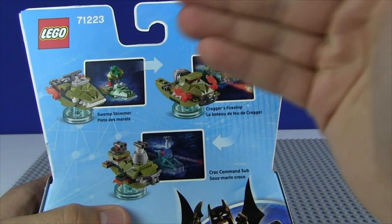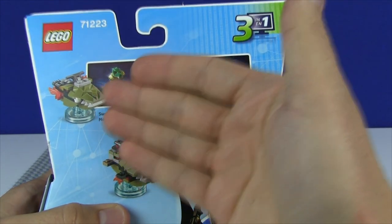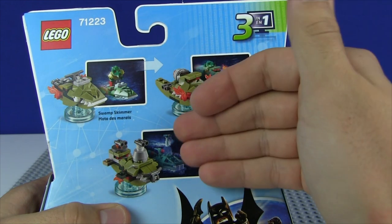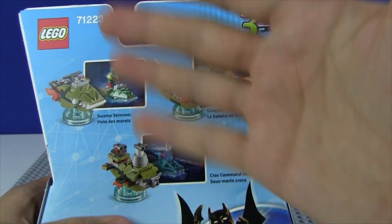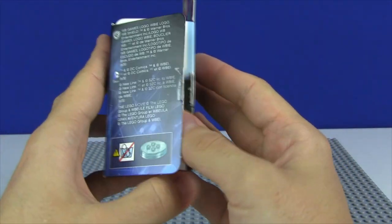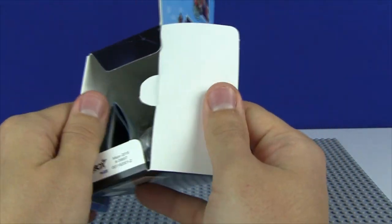And then last but certainly not least, we have the Krog Command Sub, so submarine form for the Swamp Skimmer, which is quite interesting indeed. So all water vehicles, but all different ones. Like you have, obviously, a jet ski, then you have a boat, and then you have a submarine. So very cool that they actually kept them different. Now we'll see what they are like once we actually put them together.